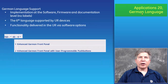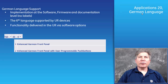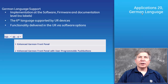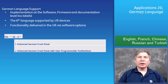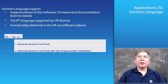Application 20: German language support. This firmware version adds German as the sixth supported language. Firmware, UR setup software, and instruction manuals are available in German. The languages supported by UR devices so far are English, French, Chinese, Russian, and Turkish. The implementation covers software, firmware, and documentation levels.